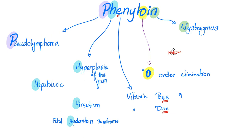Phenytoin mnemonic — PHEON: P is pseudolymphoma; H is hyperplasia of the gum (gingival hyperplasia), hepatotoxic, hirsutism, and fetal hydantoin syndrome — it's teratogenic; E is vitamin B9 (folate deficiency) and vitamin D, which equals rickets or osteomalacia; O is zero-order elimination in pharmacokinetics; N is nystagmus, or neural tube defects.